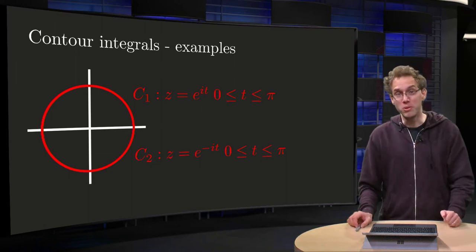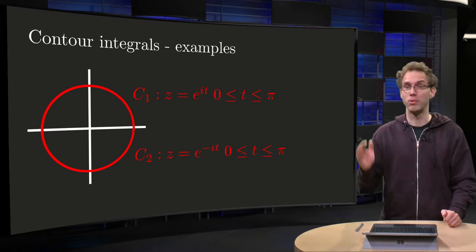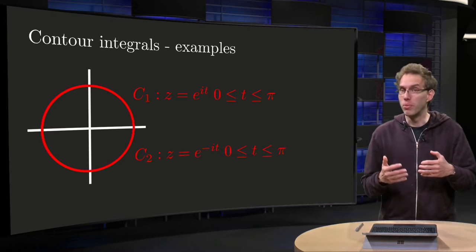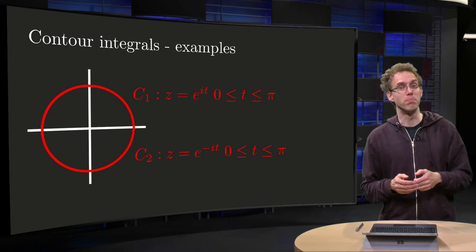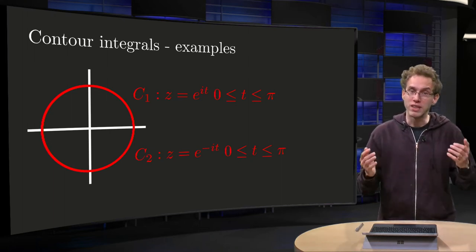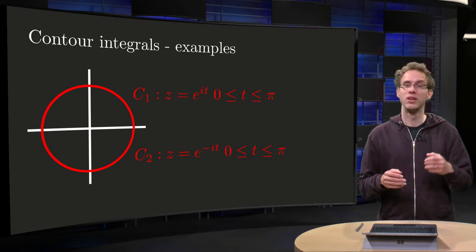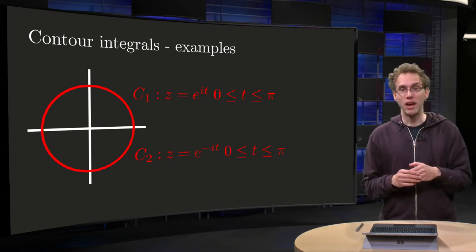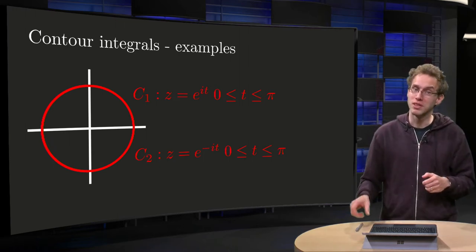You know how to compute a contour integral along a given contour from z1 to z2, but you may wonder, does the integral depend on the paths we follow from z1 to z2? Or will we find the same results for all paths? You see the answer to that question in the examples in this video.